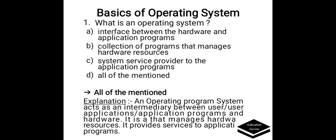First question: What is an operating system? Options are A. Interface between the hardware and application program. B. Collection of programs that manage hardware resources. C. System service provider to the application programs. D. All of the above. Correct answer is D, all of the above. An operating system acts as an intermediary between user applications and hardware. It is a program that manages hardware resources and provides services to application programs.